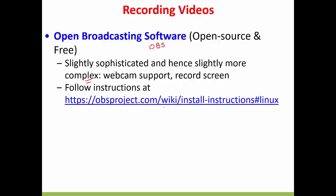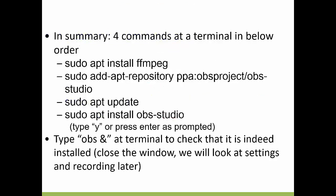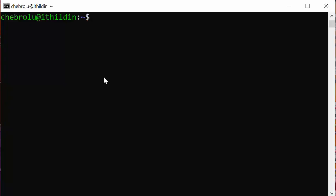To install OBS, just follow the instructions. Essentially there are four commands you have to run at the terminal, and these are listed here. We will also see these installations shortly — how the screens look. Once you install, if you type OBS at a terminal, it will show you whether it was installed successfully. For now, just close the window. The actual usage of the software we will look at later. This is how you install OBS in Linux.